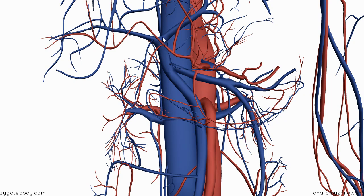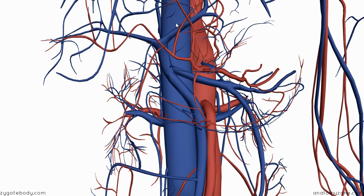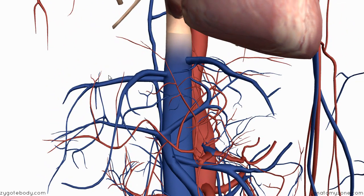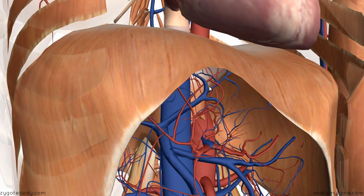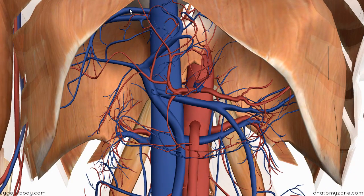This drains into sinusoids, and the sinusoids drain into the hepatic veins. You can see these two veins up here, and these drain into the inferior vena cava just before the inferior vena cava perforates the diaphragm. I've just brought the diaphragm in for reference, so you can see the hepatic veins draining into the inferior vena cava just before the IVC passes through the diaphragm.